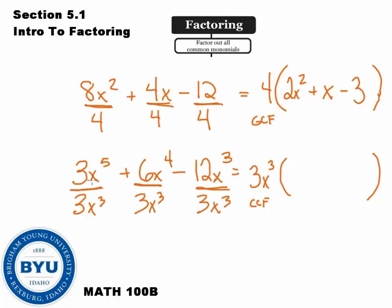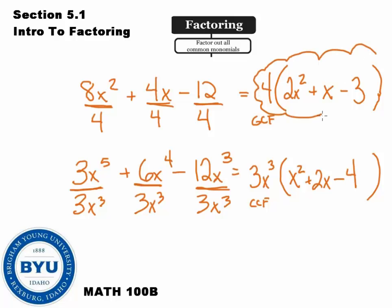So, 3x⁵ divided by 3x³: 3 divided by 3 is 1, and x⁵ divided by x³ — when we divide powers we subtract the exponents — gives us x². Then 6x⁴ divided by 3x³: 6 divided by 3 is 2, leaving us with x. And 12x³ divided by 3x³: the x³'s cancel and 12 divided by 3 is 4. This is factoring — our answer is 3x³(x² + 2x - 4). If they told us to factor, this is our answer right here.